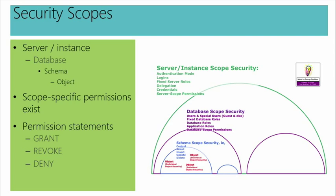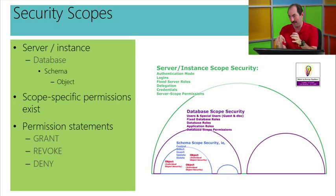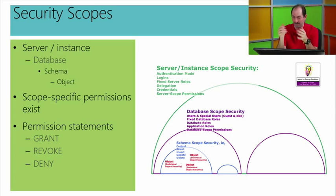The point of the diagram is to show that there are security options that can be applied at several different scopes. Up at the instance, you see example objects that are instance-level objects. Then we have database scope objects, schema scope within a database, and most granularly, individual objects within a database. You could talk about scope as a container — the database scope is inside the server scope, and the schema scope is inside the database scope. Permissions assigned at one scope generally roll downhill to the other scopes.